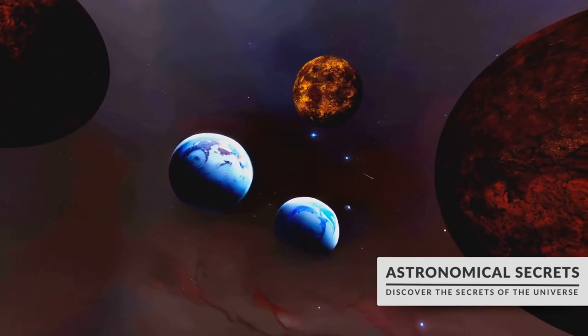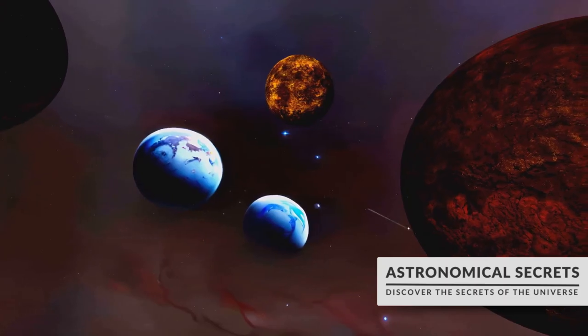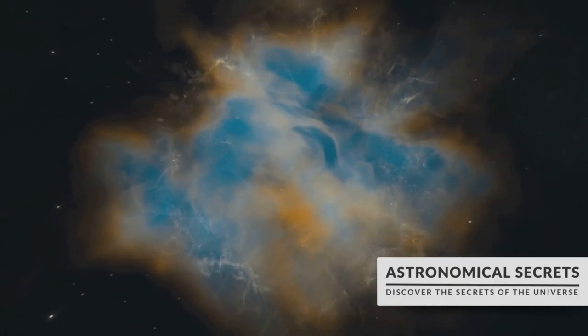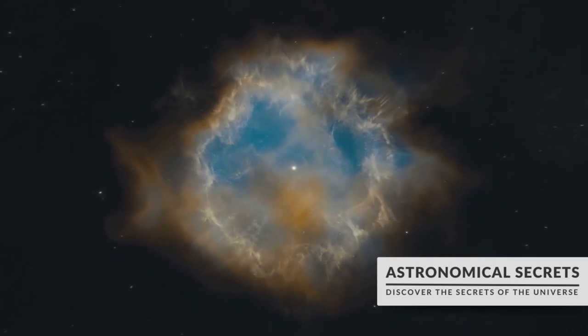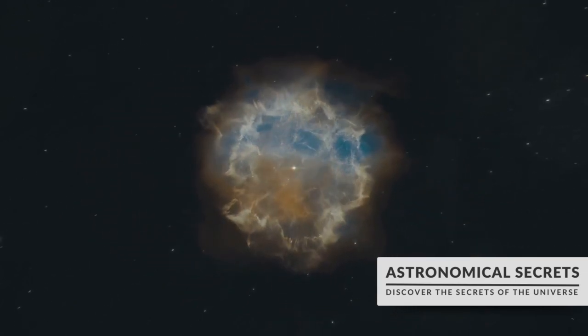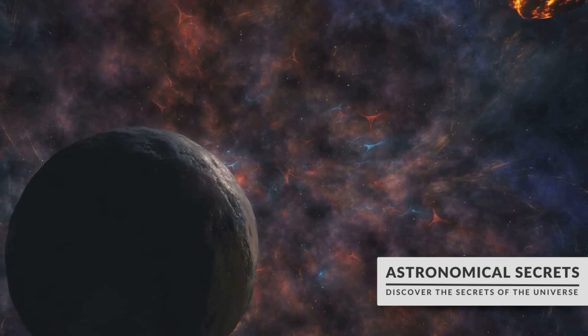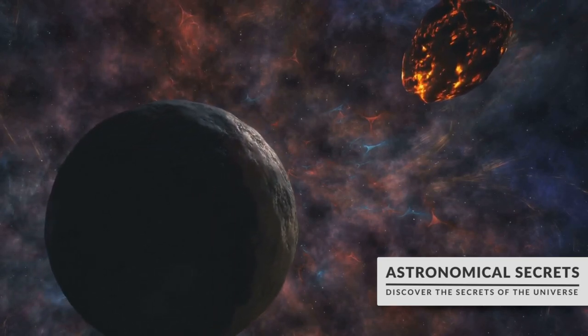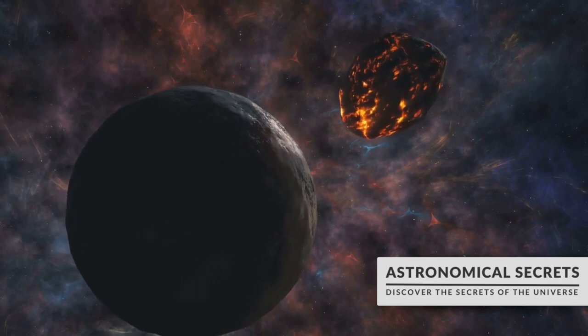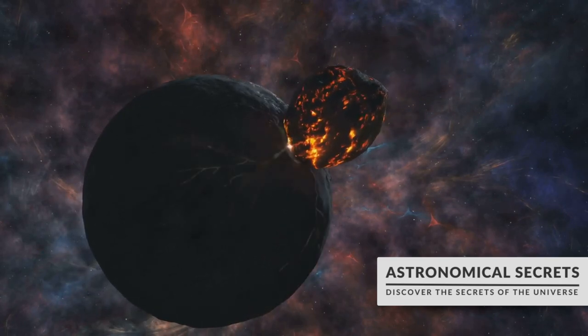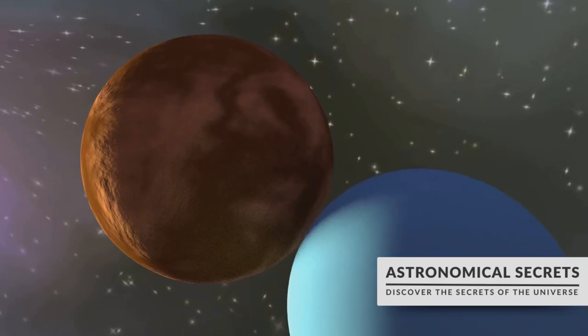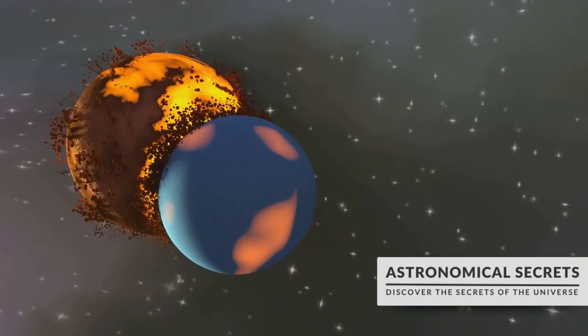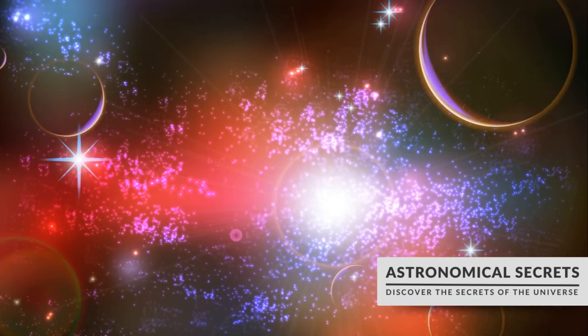The remnants of these stellar explosions, rich in heavy elements, don't just drift aimlessly in space. Over time, gravity pulls these particles together, forming dense clouds of gas and dust. And within these nebulae, new stars are born, bringing with them their planetary systems. Planets, like our Earth, are born from the dust and gas that surround these newborn stars. The denser regions of these disks begin to attract more and more matter, forming planetesimals. Over millions of years, these planetesimals collide and combine, growing in size, eventually forming planets.